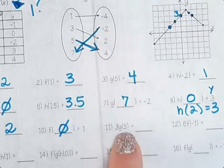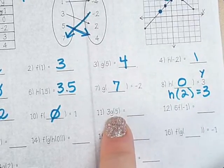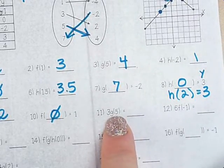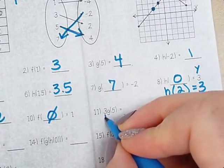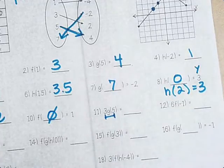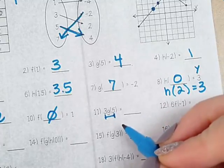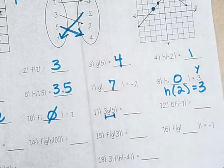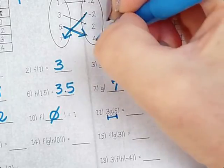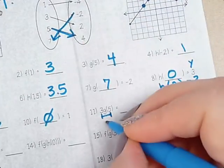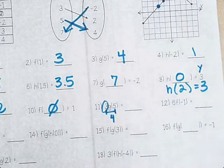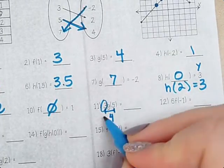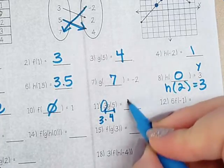Okay, 3 times g(5). So what does that mean we need to do? But it doesn't say 3 times 5. It says 3 times g(5). Can we find what g(5) is? Multiply. We'll multiply. g(5) is 4. So that means that this is 4. So then I have to multiply 3 times 4. Which gives us 12.